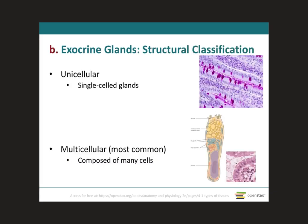Exocrine glands secrete their products into ducts that empty onto the surface of a covering or lining epithelium, such as the skin surface or the lumen of a hollow organ. There are two different types of exocrine glands: unicellular and multicellular. Uni means one, so single-celled glands. An example of a unicellular exocrine gland is the goblet cell, which secretes its products onto the lumen of the tissue. With regards to multicellular glands, we're going to see them on the next slide.